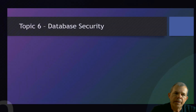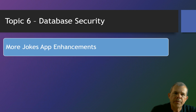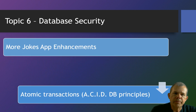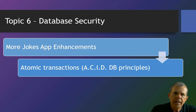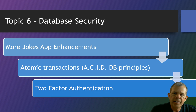In topic six, we'll talk about databases and go back to the jokes app from unit four to make further enhancements. We'll talk about ACID principles, especially atomic transactions — where multiple steps in a single transaction will either succeed or fail as a unit, and we'll roll back if any part fails. We'll also add two-factor authentication to our app, using a device like your cell phone to verify that the person logging in is the real user.